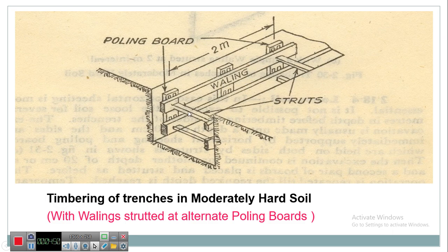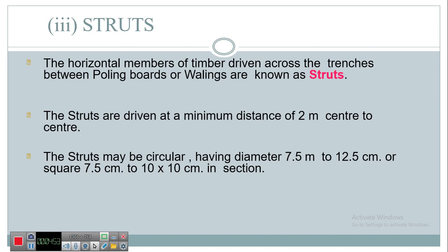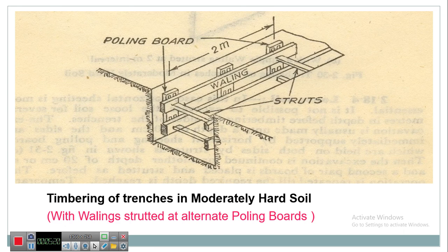Another member is the strut — horizontal members of timber driven across the trenches between polling boards or walling are known as struts. Struts are driven at a minimum distance of two meters center to center — always remember this. A strut may be circular, having a diameter varying from 7.5 to 10 centimeters in section. In the image you can see four struts: one, two, three, and four. This member is called a strut, used for timbering.